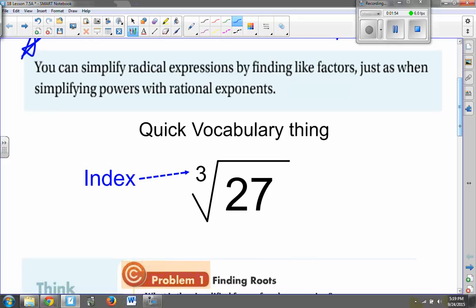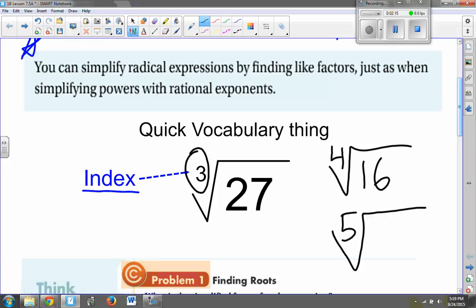So a quick vocabulary thing. This number here that tells you what root you are taking is called the index. So it could be a 3, it could be a 4, for example, the fourth root of 16, the fifth root of 32, anything like that. These are all called the index, that number there.